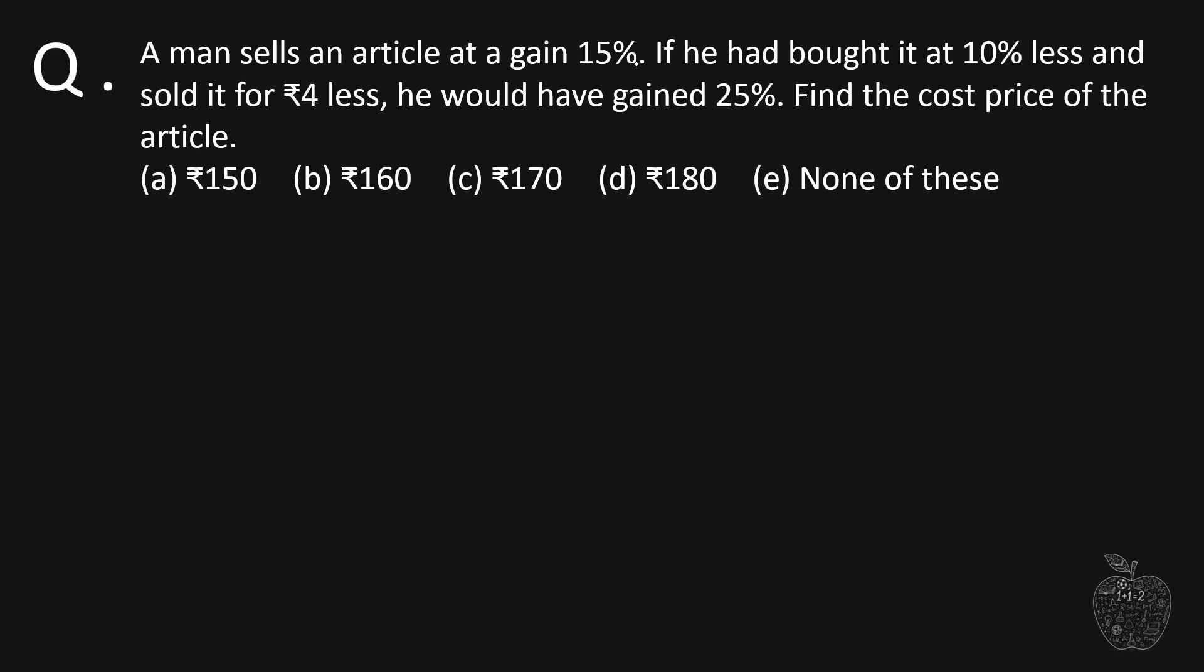A man sells an article at a gain of 15 percent. If he had bought it at 10 percent less and sold it for 4 rupees less, he would have gained 25 percent. Find the cost price of the article.